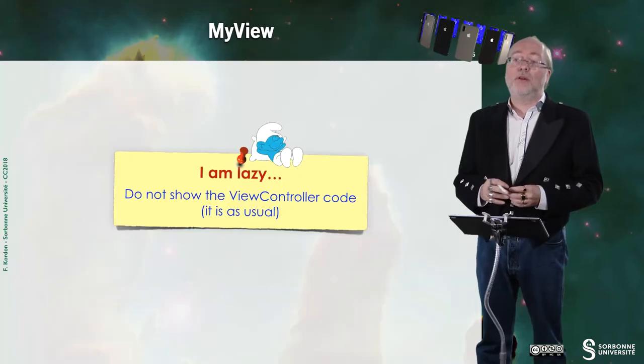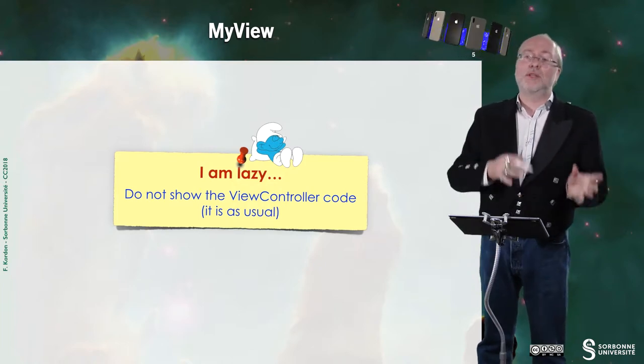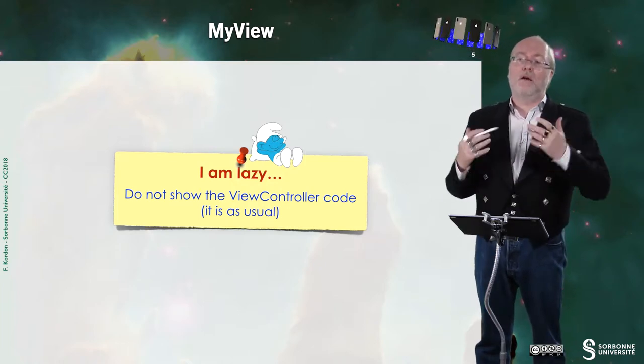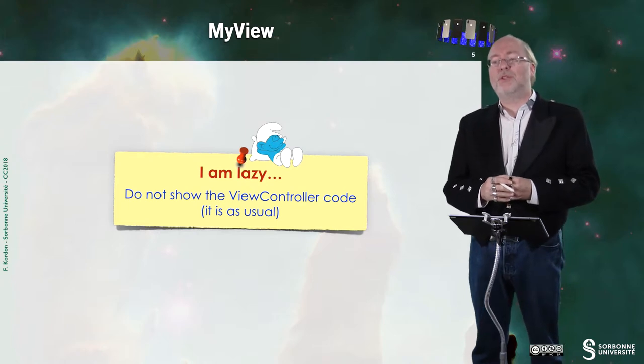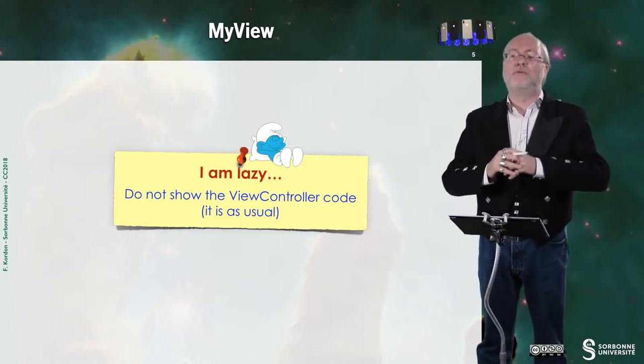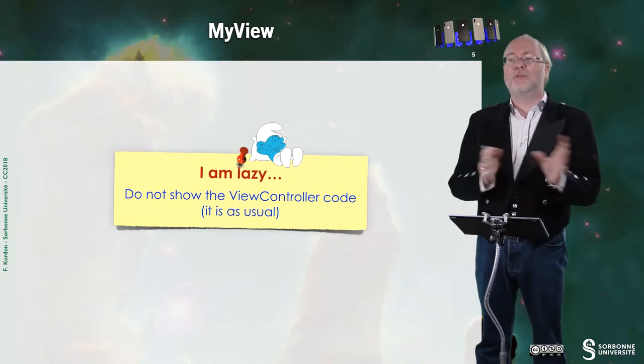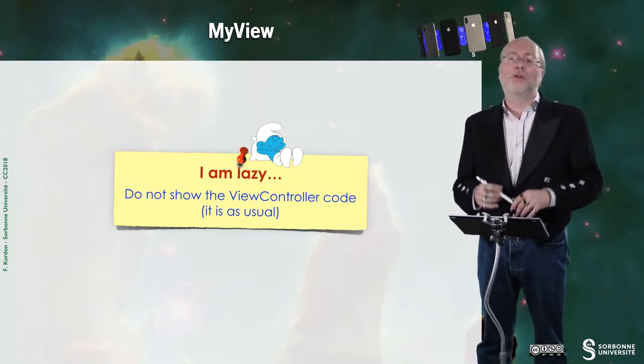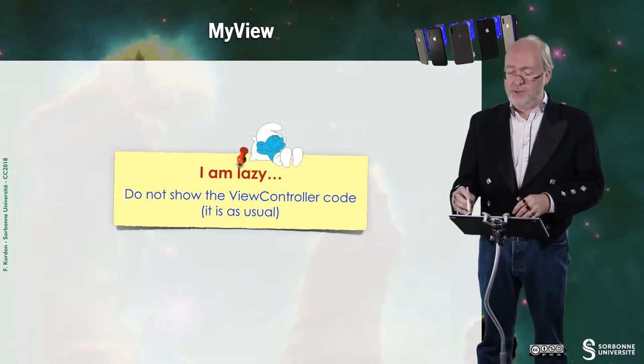So I just give you the content of my view. Here I did use the MVC model. But the view controller is, as usual, instantiating by view. Implementing a view will transition to size to call the dedicated method in by view. So very similar to lots of view controllers we already saw in previous videos.